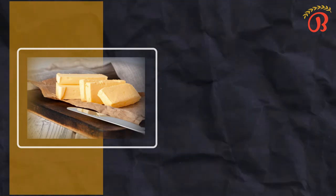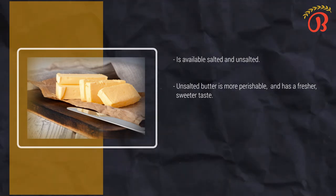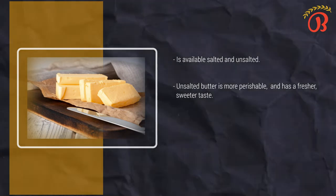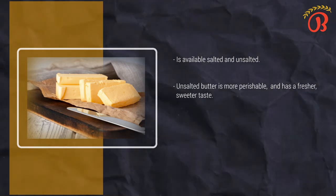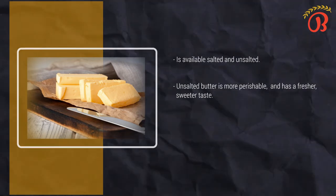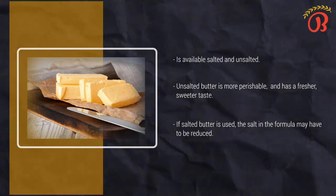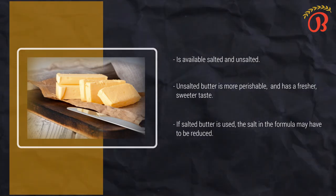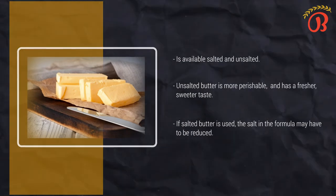Butter is available salted and unsalted. Unsalted butter is more perishable, but it has a fresher, sweeter taste and is thus preferred in baking. Salt can mask flavors that might be absorbed during storage, making it harder to tell if salted butter has foreign flavors that might detract from the finished baked goods. If salted butter is used, the salt in the formula may have to be reduced. It is difficult to know exactly how much to reduce the salt content because salted butters vary in their compositions.